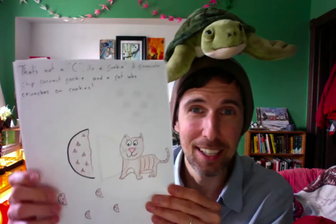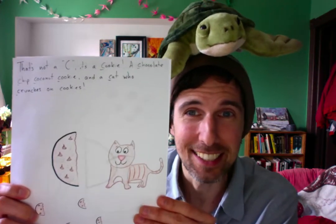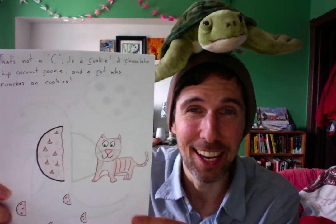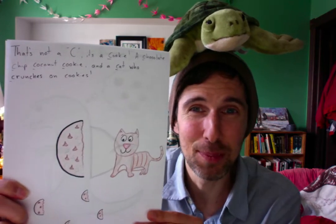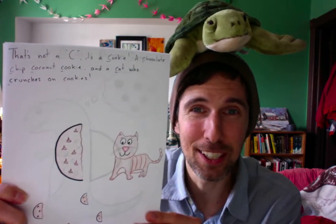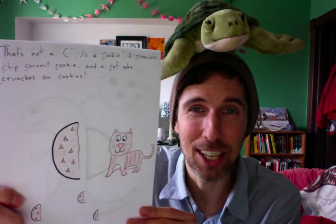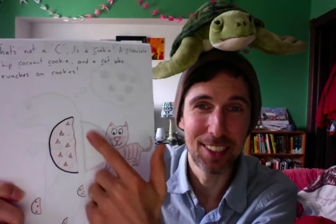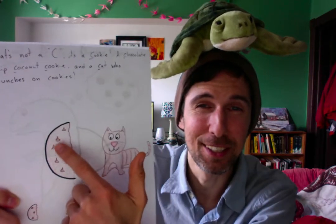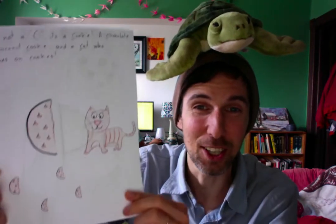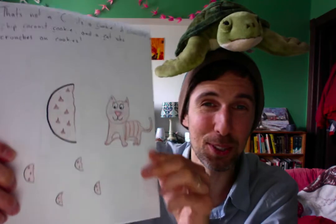And then here's one. That's not a C, it's a cookie — a chocolate chip coconut cookie and a cat who crunches on cookies. And you can see the black part is a C, but it's turning into a cookie.